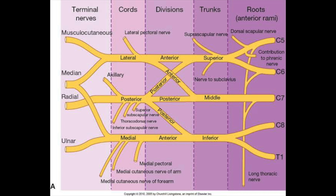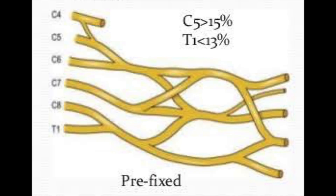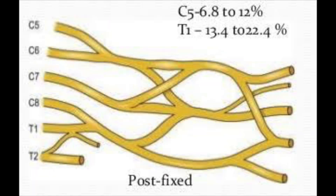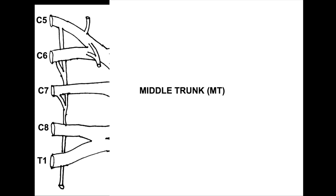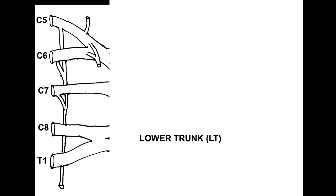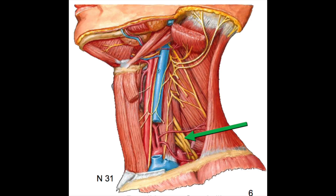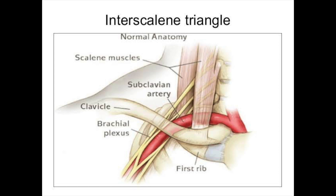The anterior primary rami of C5, C6, C7, C8, and T1 form the brachial plexus. Occasionally C4 or T2 may contribute, giving a pre-fixed or post-fixed brachial plexus. These roots lie between the scalenus anterior and scalenus medius muscles. At the base of the neck, C5 and C6 join to form the upper trunk, C7 continues as the middle trunk, and C8 and T1 join to form the lower trunk. These trunks lie in the posterior triangle of the neck. The lower trunk lies posterior to the subclavian artery and on the upper surface of the first rib.